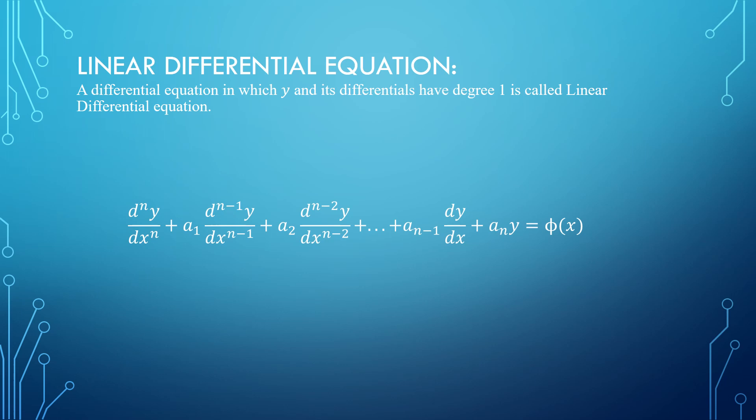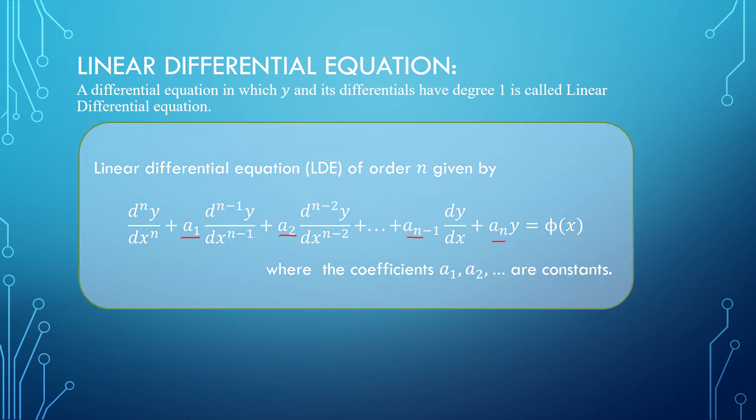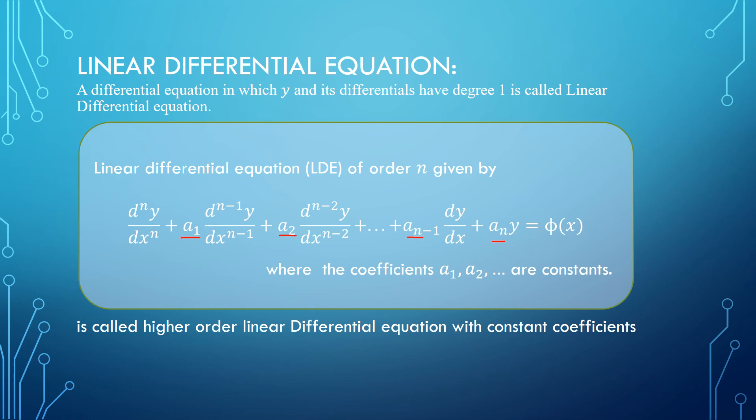There is something special here: the coefficients a₀, a₁, a₂, ..., aₙ are all constants. That is why an equation of this type is called a linear differential equation with constant coefficients. It is called higher order because n may be greater than 2.